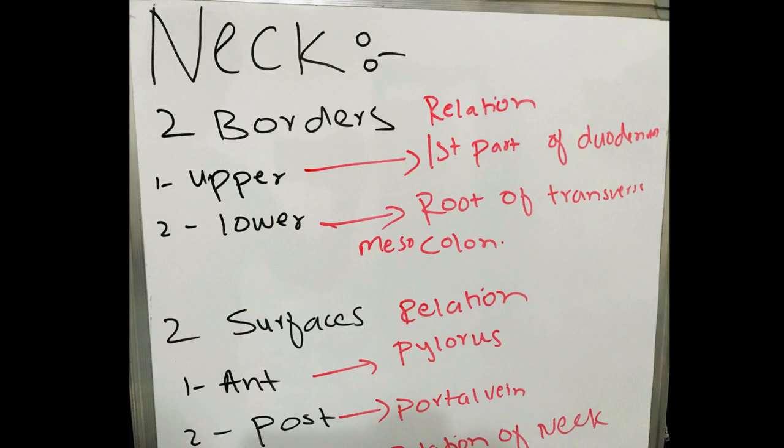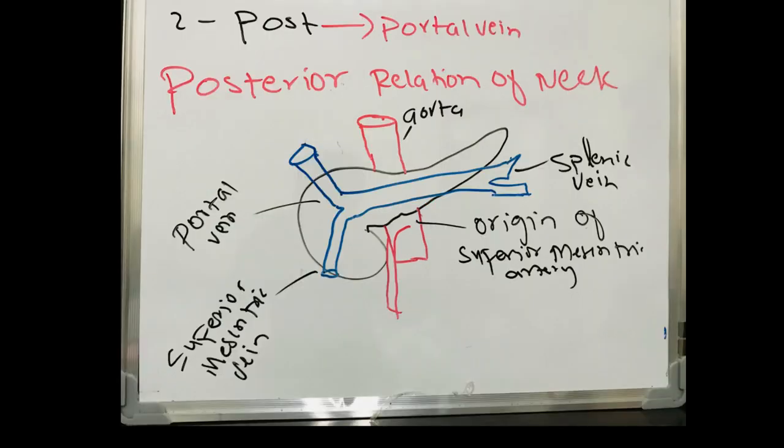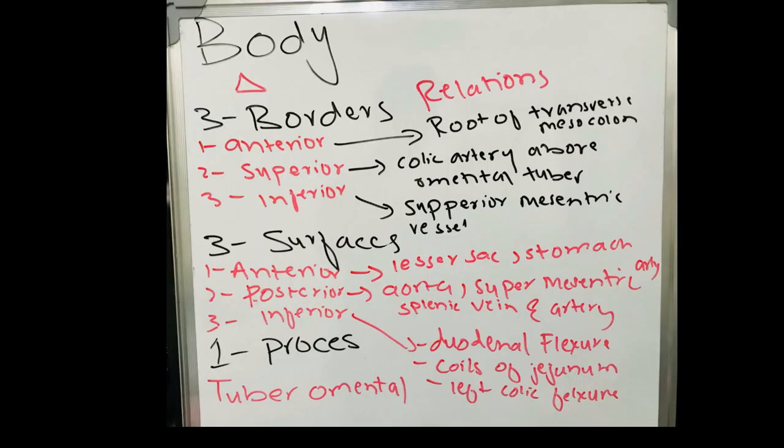The neck of the pancreas consists of two borders and two surfaces. The upper border is related to the first part of the duodenum, and the lower border is related to the root of the transverse mesocolon. The anterior surface is related to the pylorus, and the posterior surface is related to the portal vein, as seen in the diagram.